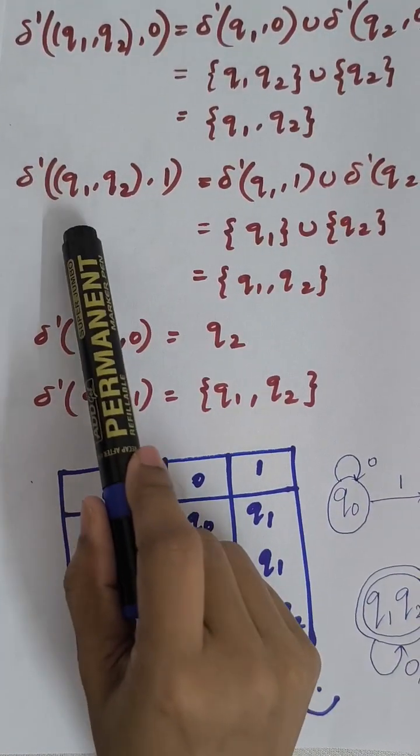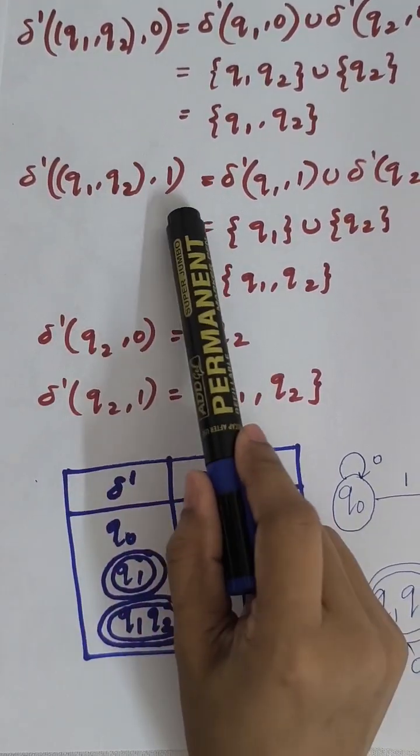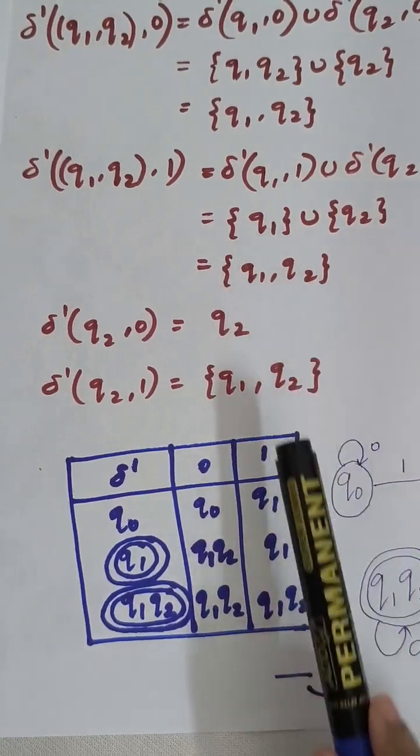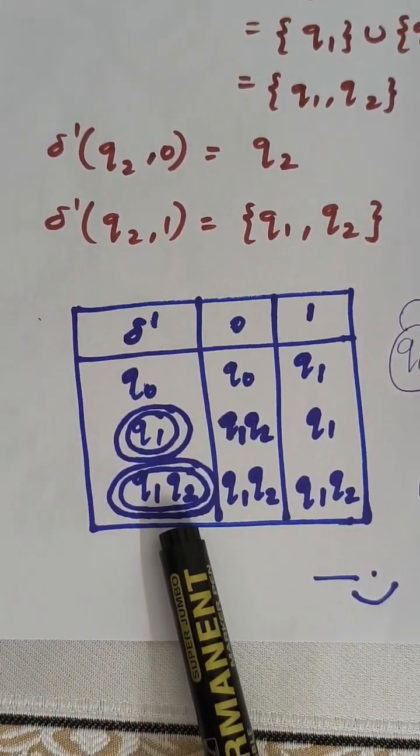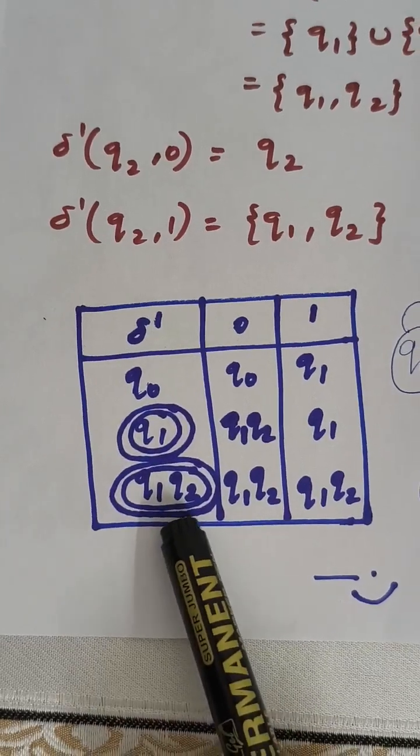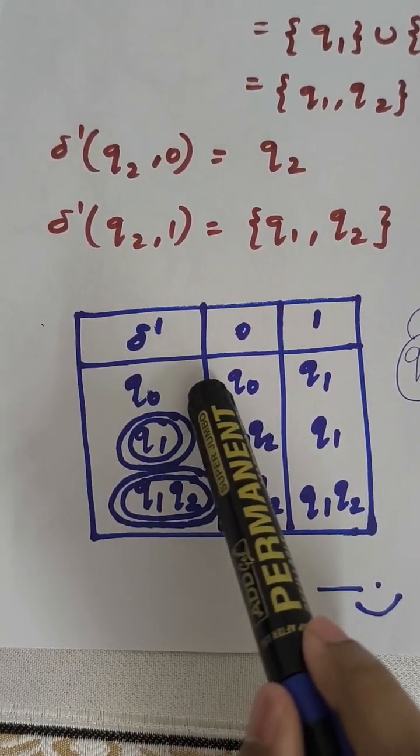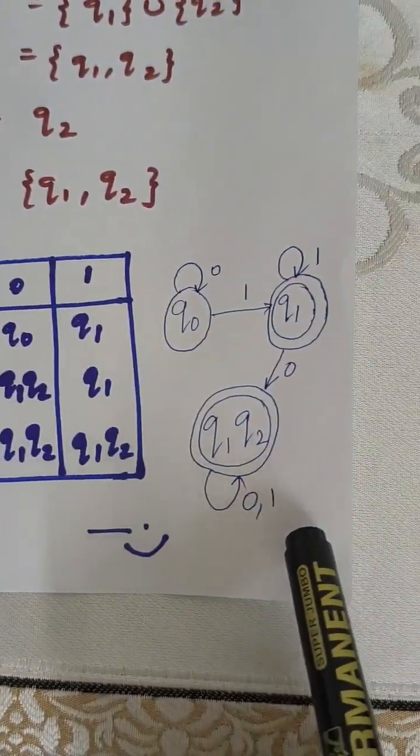Similarly with Q1 and Q2 on 1, you get again Q1 and Q2. With the new transition table, Q1 and Q2 both become the final state. When a state is double circled, it is the final state and this is the DFA.